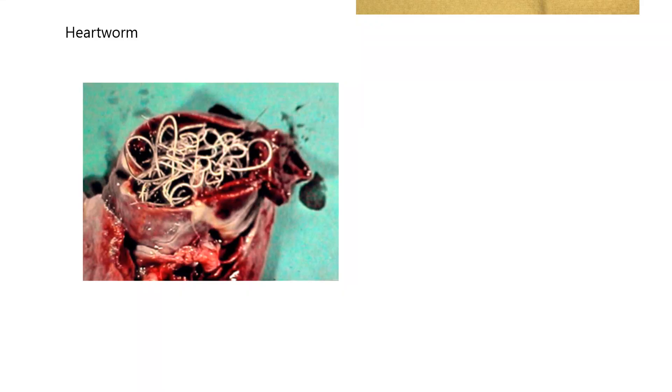Finally, I want to say a word about heartworms, because that's another condition that can affect our pets — especially dogs, though many animals can get heartworm. I want to show you a couple images since adult heartworms love to live in the heart. These are taken after the animal has died — probably from heartworm infestation. You can see the heart in red, and the heartworms are what look like spaghetti here. We're probably already down into the ventricles.